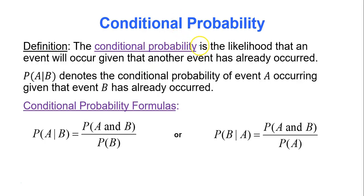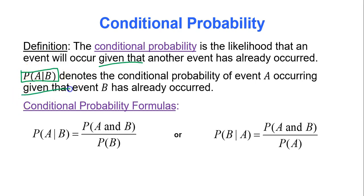The official definition is: conditional probability is the likelihood that an event will occur given that another event has already occurred. The notation is P(A | B) — the vertical line means 'given that' — and it means find the probability of event A occurring given that event B has already occurred.